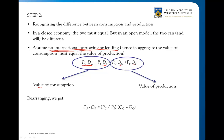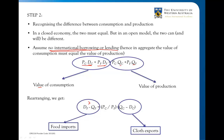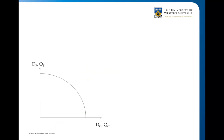We can rearrange this expression: on the left-hand side we get the value of imports — if consumption is greater than production, by definition we must be importing. On the other side we have cloth exports — where production exceeds consumption, the difference is what we're exporting — along with the relative prices. What we're saying is that what you earn from exports you can turn around and spend on your imports. That's the constraint, and that's why we need the assumption of no borrowing or lending.